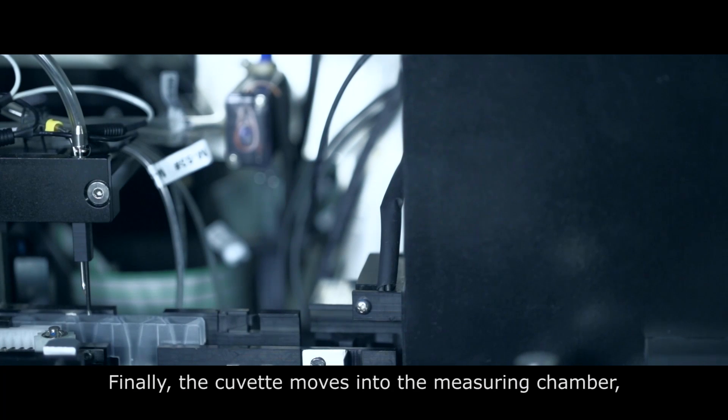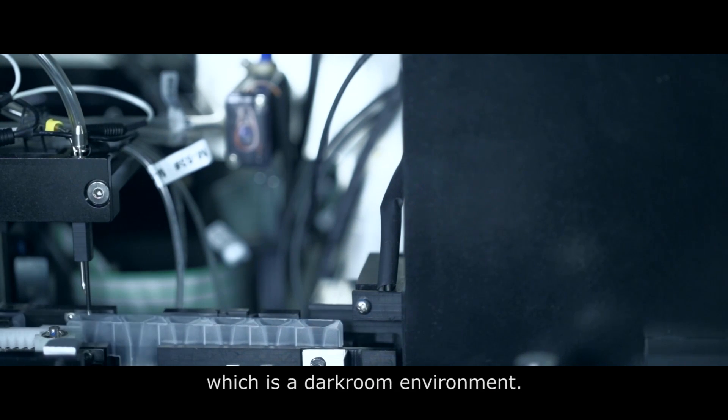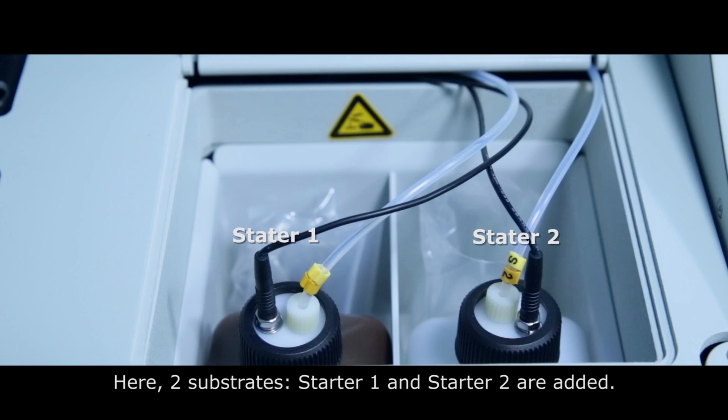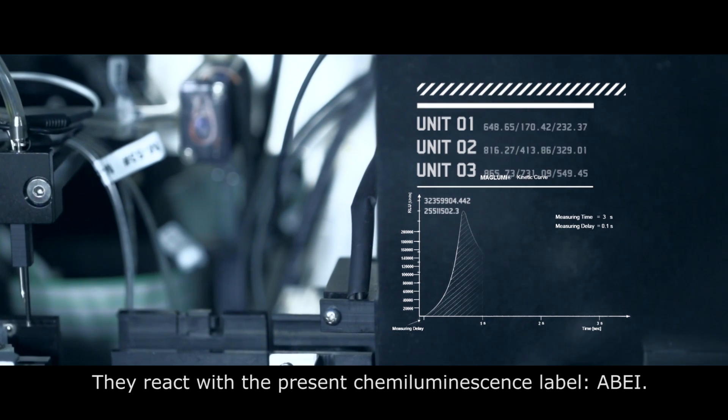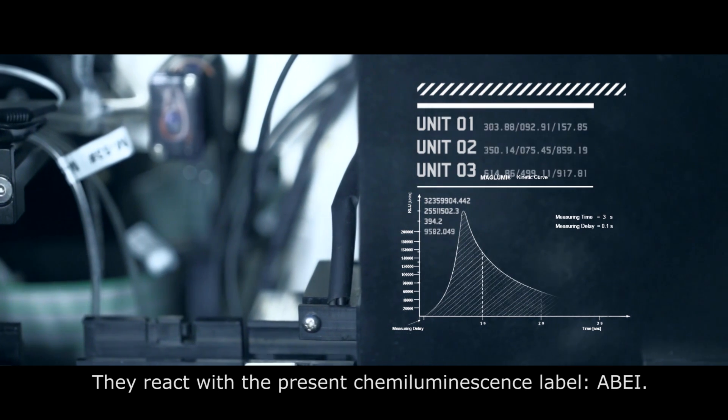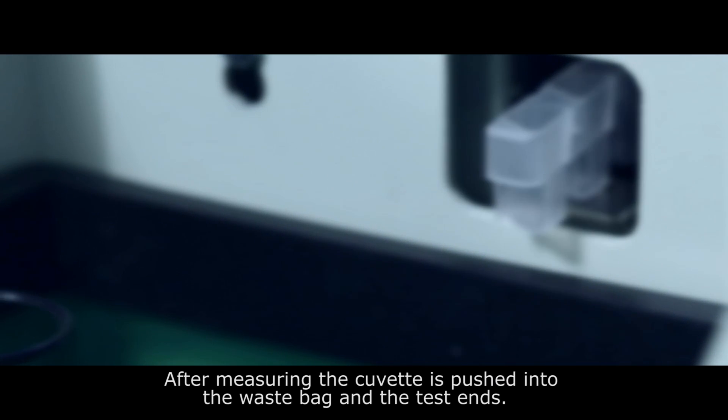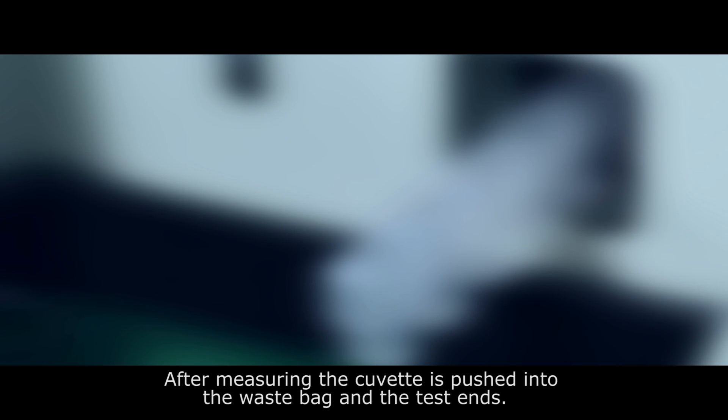Finally, the cuvette moves into the measuring chamber, which is a darkroom environment. Here, two substrates, starter 1 and starter 2, are added. They react with the present chemiluminescence label. After measuring, the cuvette is pushed into the waste bag and the test ends.